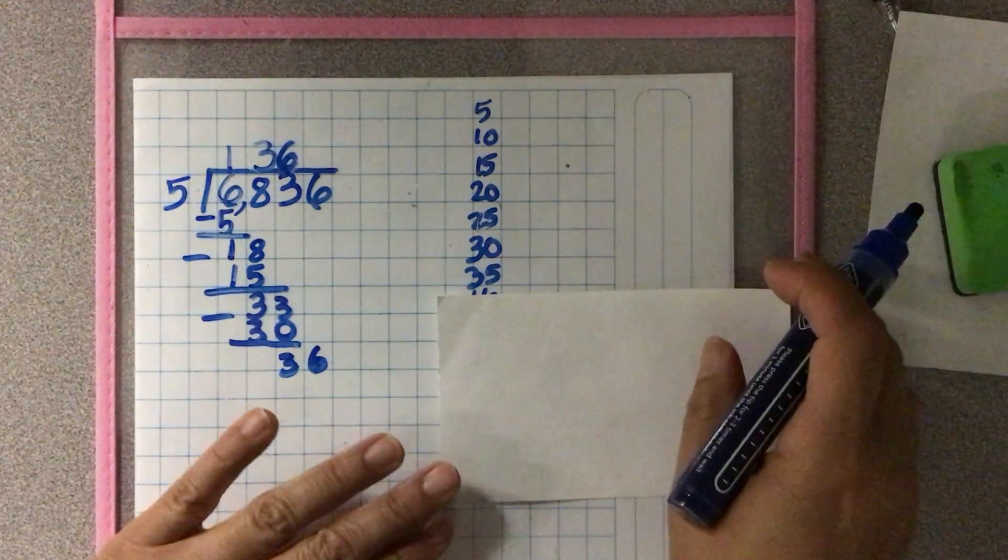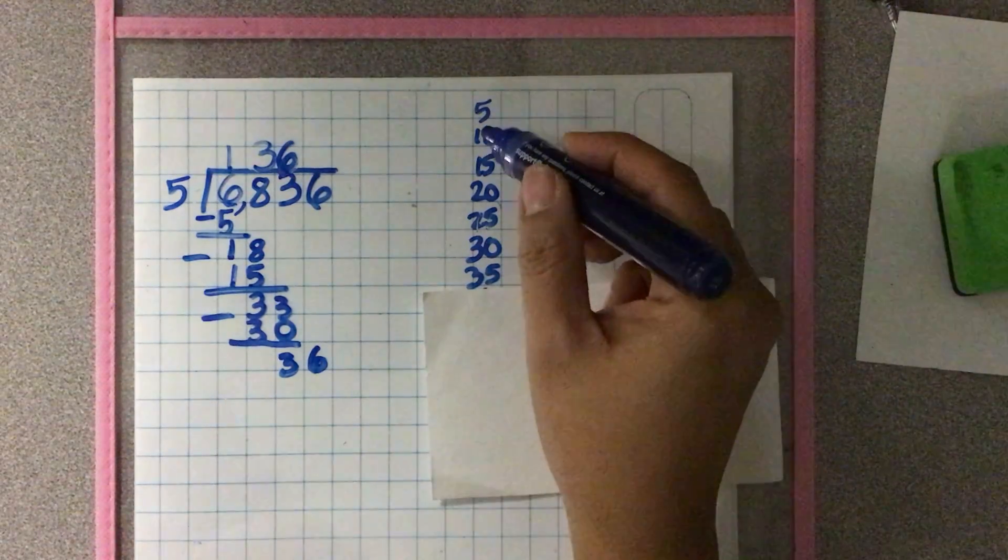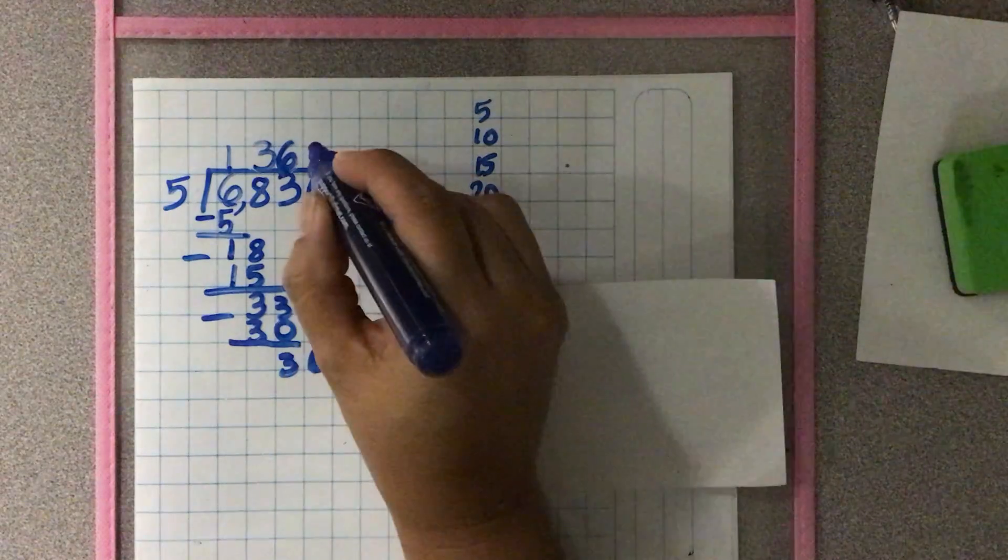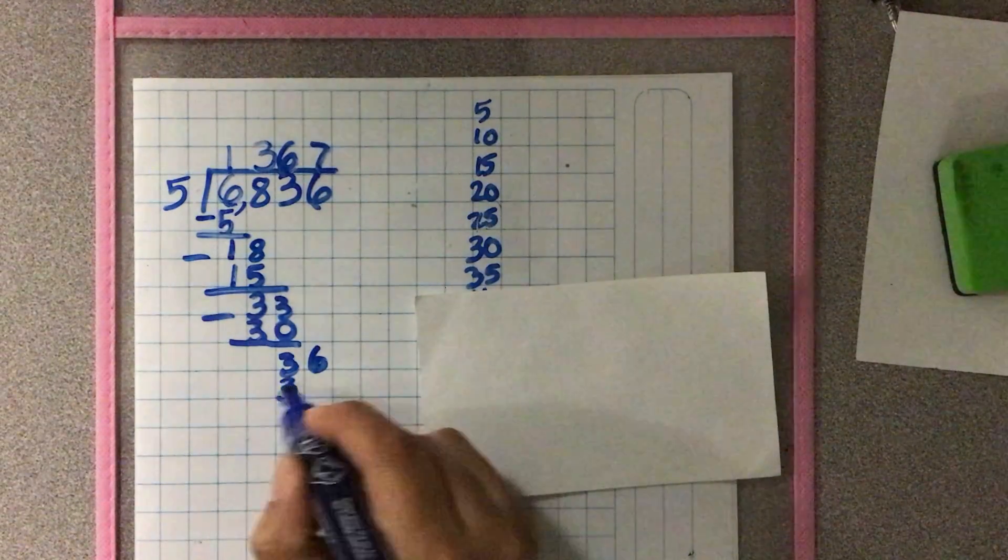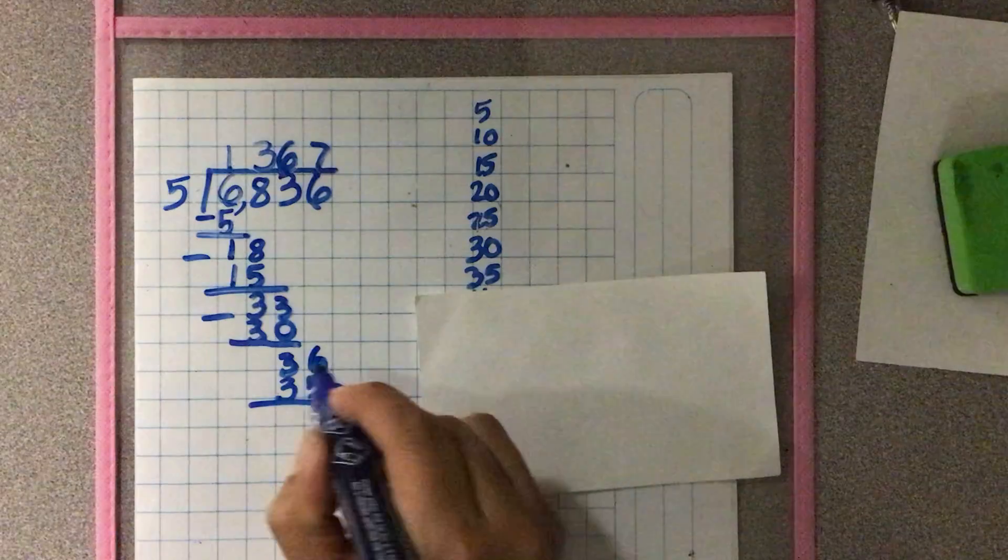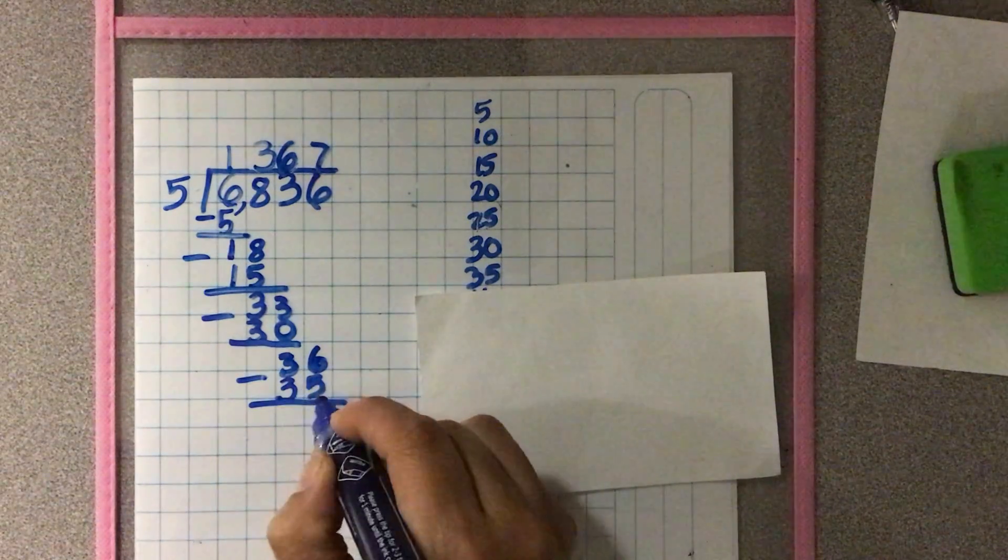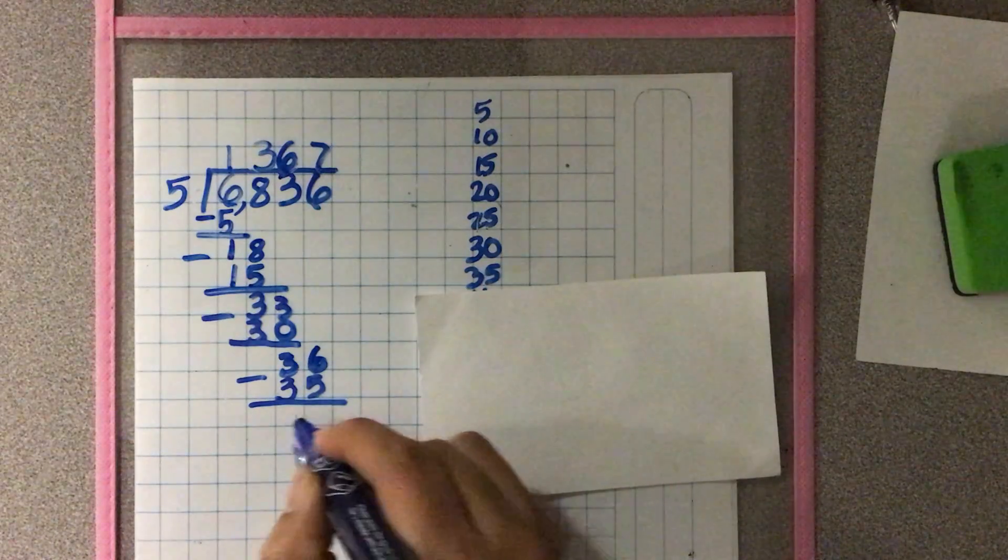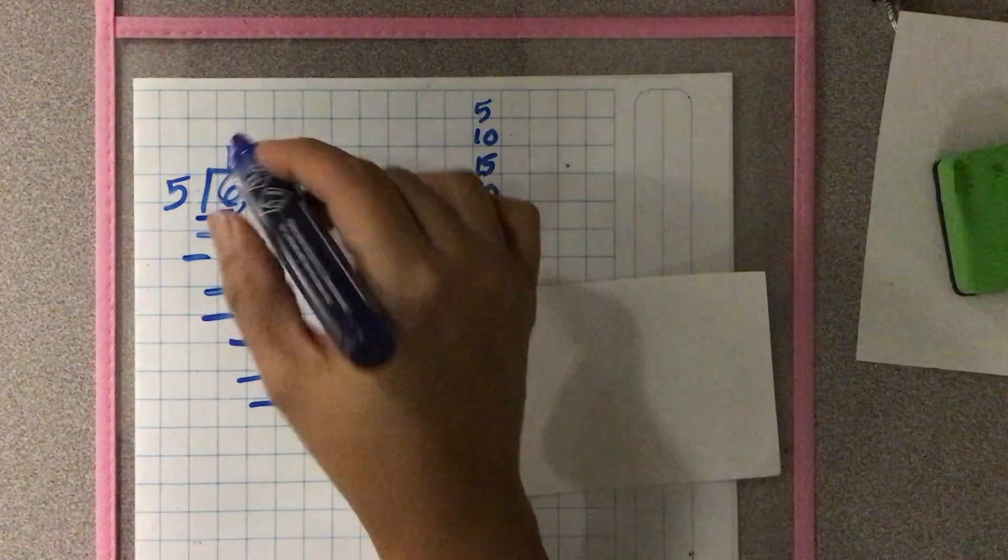How many 5s do I have in 35? 1, 2, 3, 4, 5, 6, 7. 7 times 5 is 35. So if I had 36 and I use 35, 36 minus 35 equals just 1.